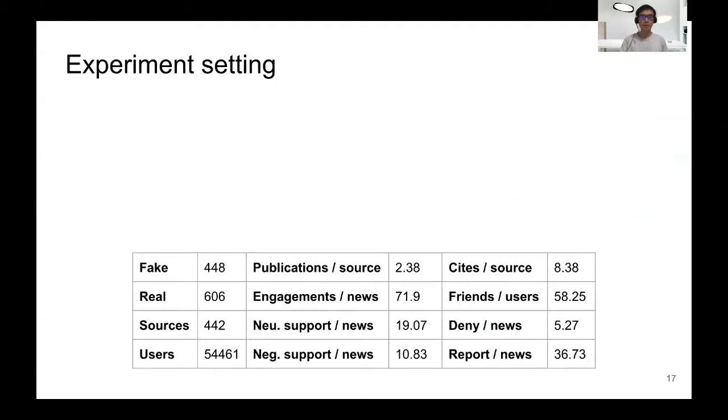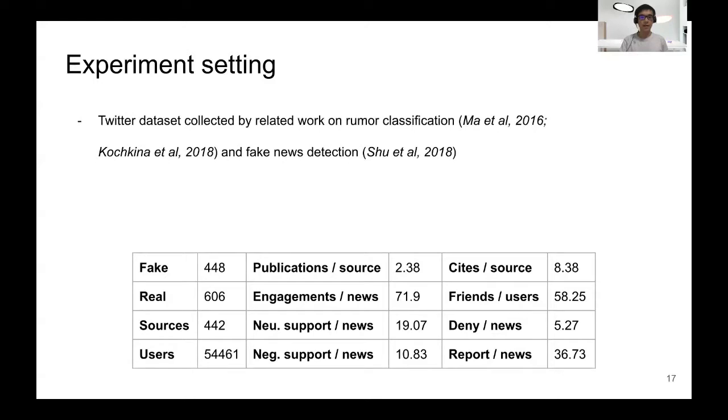We conduct experiments to verify the effectiveness of our method. For the data, we use the Twitter dataset collected by related works on rumor classification and fake news detection. We also mine additional media sources data. Our fake and real news labels are obtained from Snopes and PolitiFact.